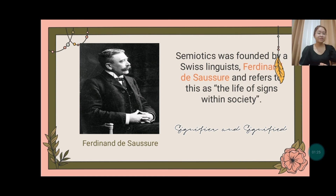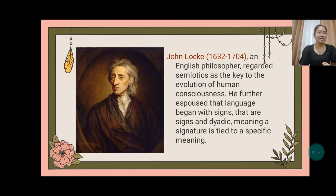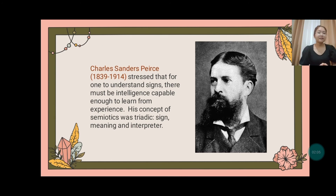Other than Saussure, there is John Locke, an English philosopher who regarded semiotics as the key to the evolution of human consciousness. He further espoused that language began with signs and that signs carry a dyadic meaning tied to a specific concept. Meanwhile, Charles Sanders Peirce stressed that for one to understand signs, there must be intelligence capable enough to learn from experience. His concept of semiotics was triadic: sign, meaning, and interpreter.